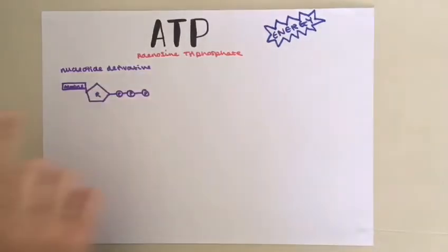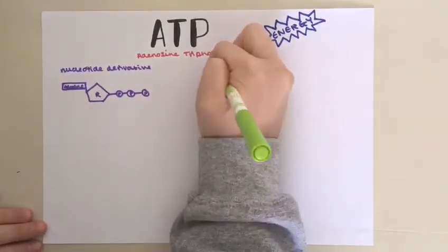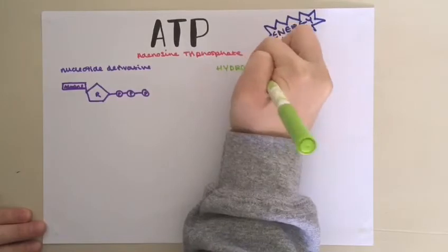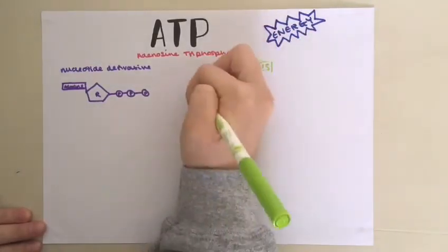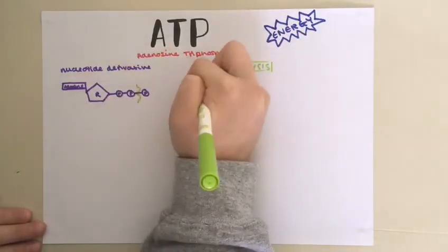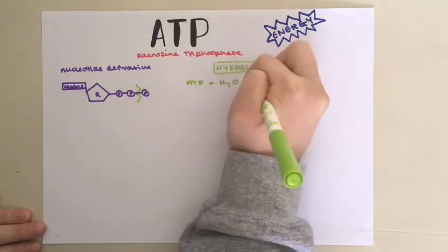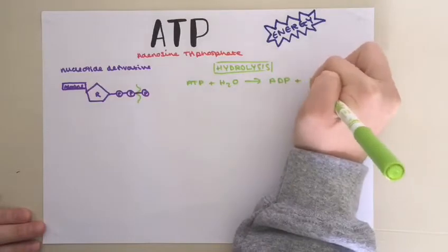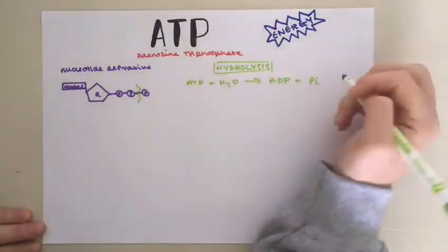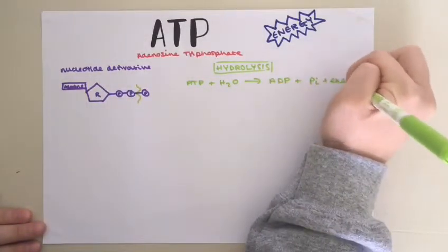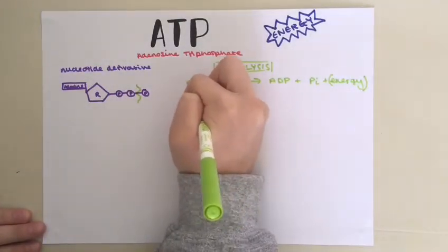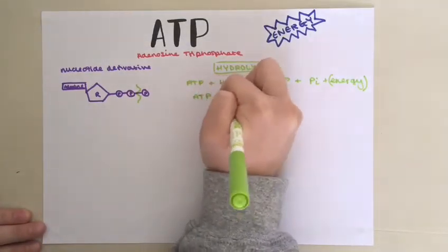The energy is stored in the bonds between these phosphate groups. A hydrolysis reaction can break one of these bonds, forming ADP, which is adenosine diphosphate, and inorganic phosphate, which comes off here, plus energy. This is catalyzed by an enzyme known as ATP hydrolase.